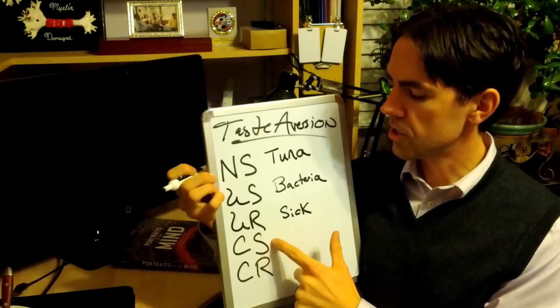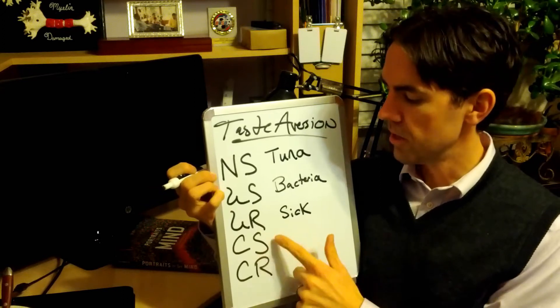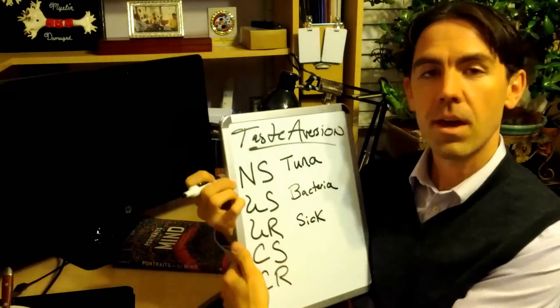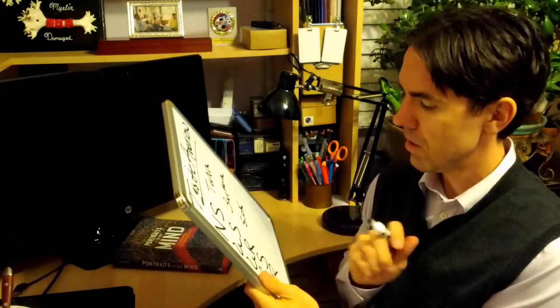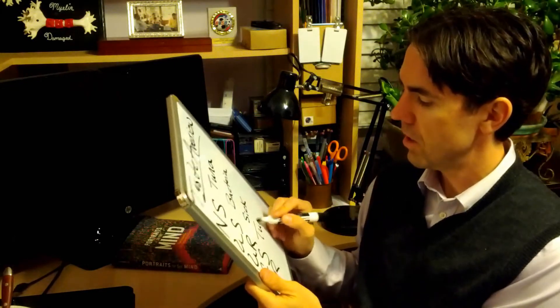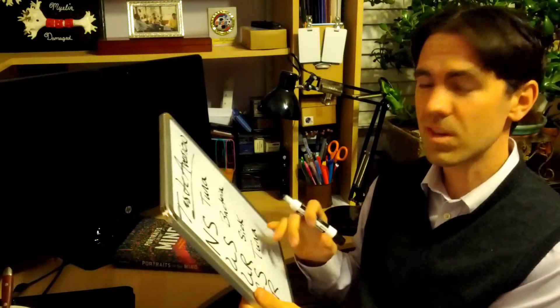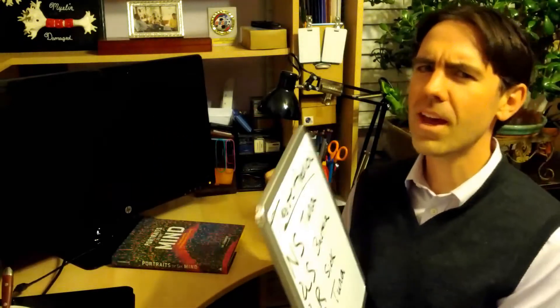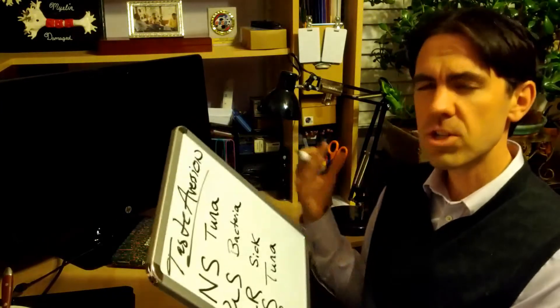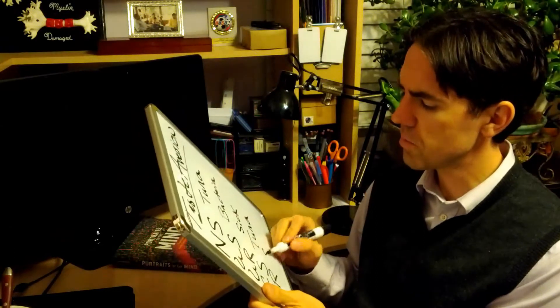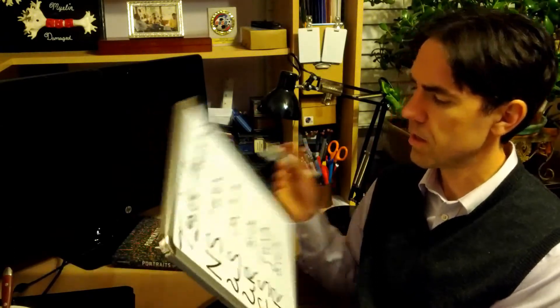Now we have the conditioned stimulus and the conditioned response. Conditioned stimulus is going to be the same as the neutral stimulus. And that's the tuna. And then the conditioned response in this situation, that's going to be essentially the same thing. Now you may not vomit, but you're going to feel nauseous. You might get that same exact feeling. So I'm going to just put sick.